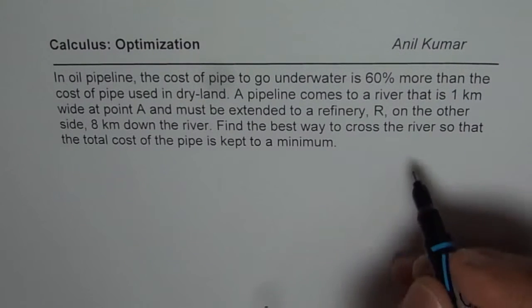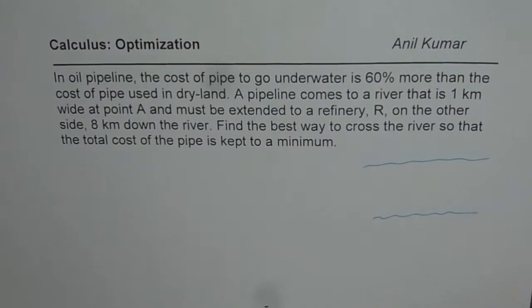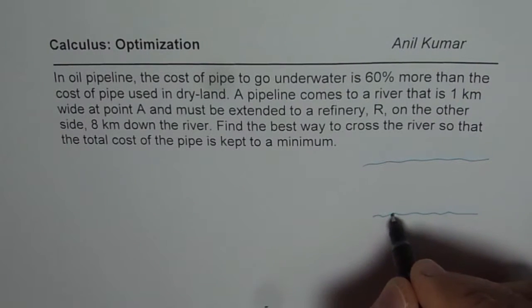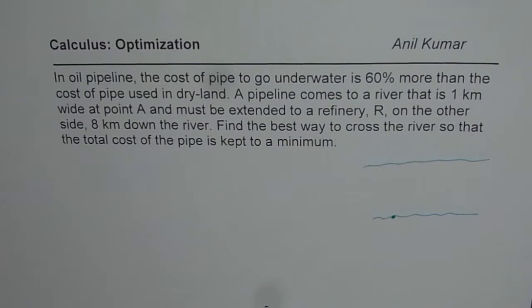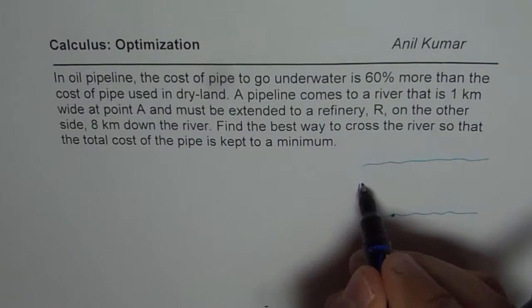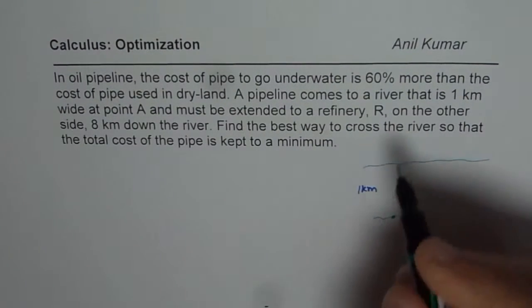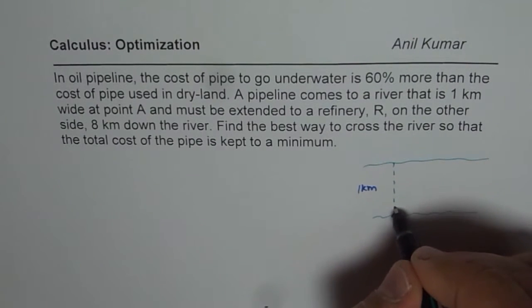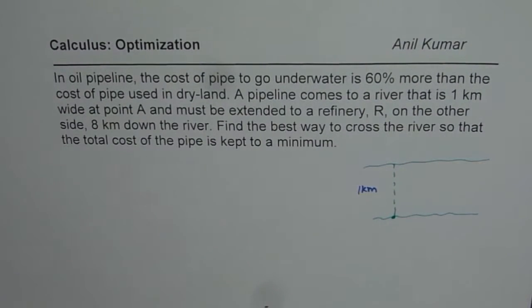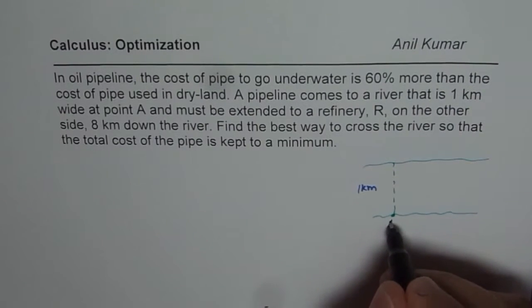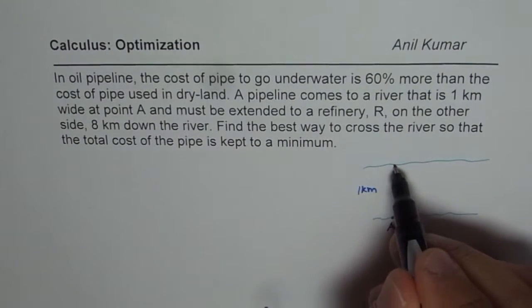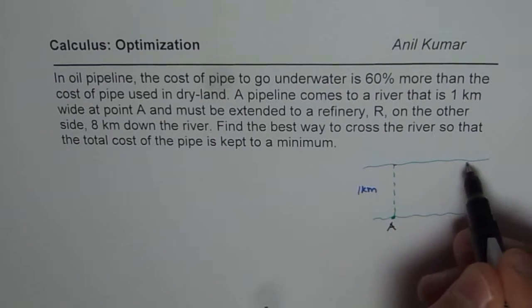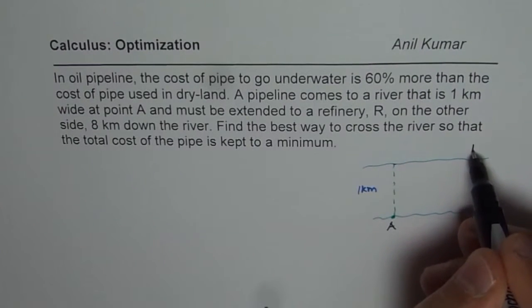Let us first sketch a diagram. This is the river, and you come to a point here which is A. The river is 1 km wide, so that is the width in kilometers. This is point A from where the pipe has to go to point R, which is 8 km down the river.